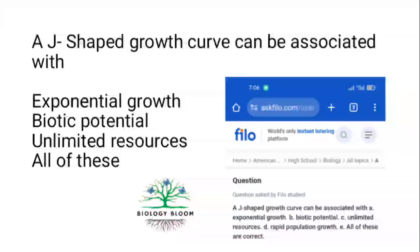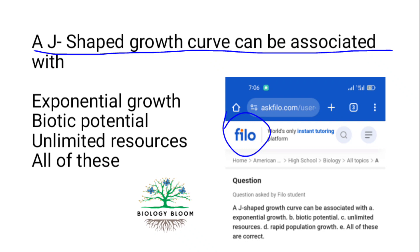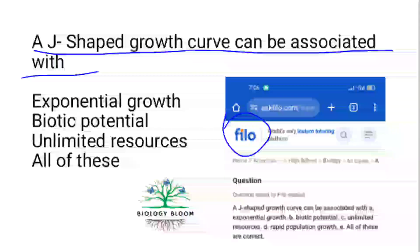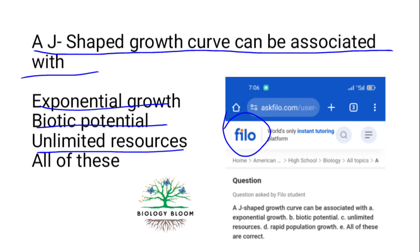Next, taken from a website as it is: A J-shaped growth curve can be associated with which of the following — exponential growth, biotic potential, unlimited resources, or all of these? The J-shaped curve is related to all of these.